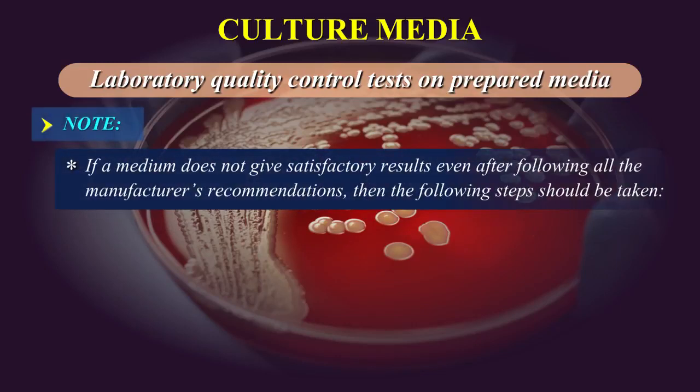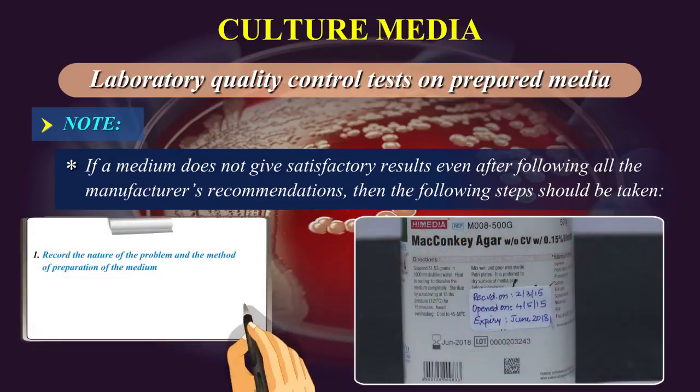If a medium does not give satisfactory results even after following all the manufacturer's recommendations, then these steps should be taken: record the nature of the problem and the method of preparation of the medium, note the lot or batch number and the date it was received, and call the technical support number of the supplier.